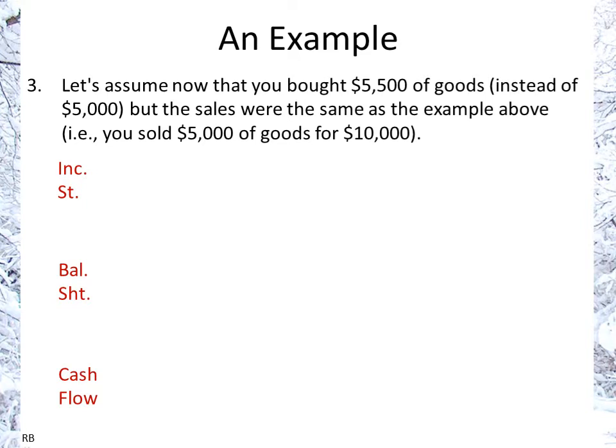Now we're going to add some more complicating factors. The base income statement will not change because in all cases we're selling $5,000 worth of inventory for $10,000. However, now in this case, instead of purchasing $5,000 worth of goods, we've purchased $5,500 worth of goods. So our income statement would be the same — sales, cost of goods sold — but now on the balance sheet, we will have earned $5,000 extra on top of what we started the year with, but we've spent an extra $500 in goods which we haven't sold yet, so they will be in our balance sheet as inventory.